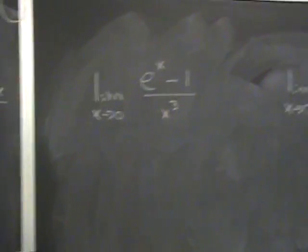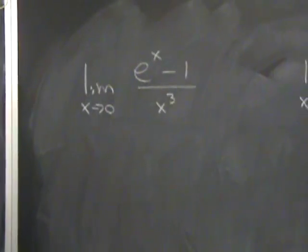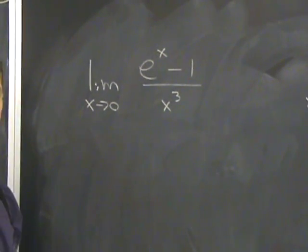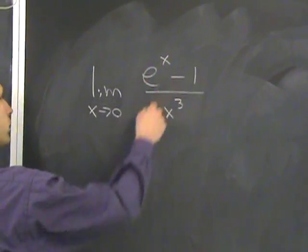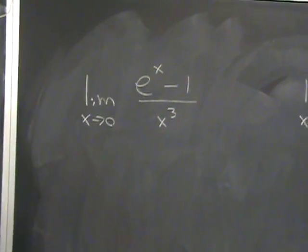Third case here. Something that looks pretty scary. There's nothing that we can really do to this, aside from L'Hôpital's rule. You try to plug in 0, and you get 0 over 0, free to do the rule.